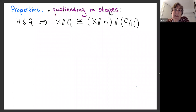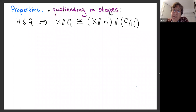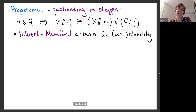Mumford's GIT has very nice properties. The first I want to mention is quotienting in stages: if H is a normal reductive subgroup of G, we can construct the GIT quotient of X by G by first constructing the quotient by H, then quotienting by the induced action of G mod H. This gives the GIT quotient of X by G if we choose the linearizations appropriately.